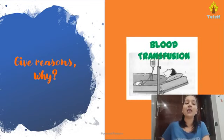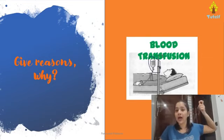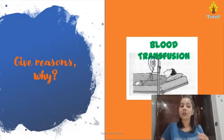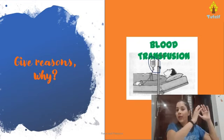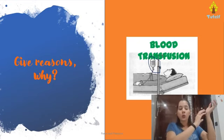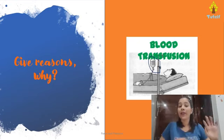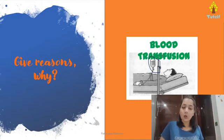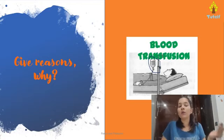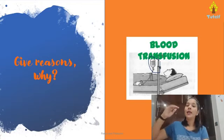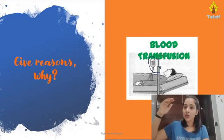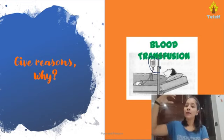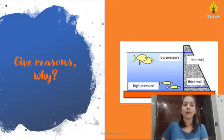For blood transfusion, the bottle is placed at a greater height. At a higher level the liquid pressure is high, so the fluid can flow into the veins easily. If it were kept at a lower level it would have low pressure and would not be able to enter the veins. The force with which water comes out is greater at a higher level.